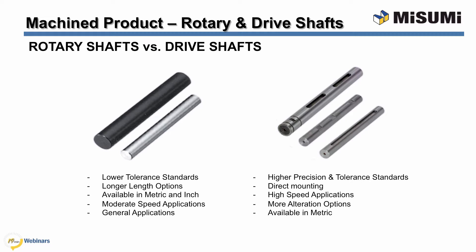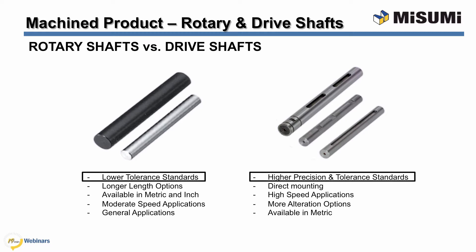Rotary shafts are usually sufficient for general applications and are the more popular option of the two. Rotary shaft tolerances are slightly lower compared to the drive shafts, making drive shafts more suitable for higher speed and higher accuracy applications. Many customers prefer the drive shaft option for more critical applications such as direct mounting to a drive source. Drive shafts also offer many additional machining alterations not offered on the rotary shaft lineup. However, rotary shafts are available in longer lengths and in inch sizes.